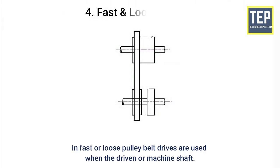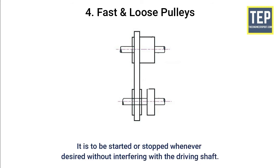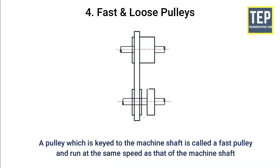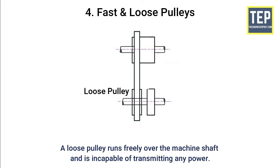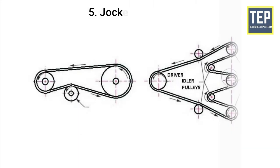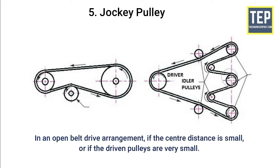In fast or loose pulley belt drives, the belt is used when the driven or machine shaft is to be started or stopped whenever desired without interfering with the driving shaft. A pulley which is keyed to the machine shaft is called a fast pulley and runs at the same speed as the machine shaft. A loose pulley runs freely over the machine shaft and is incapable of transmitting any power.